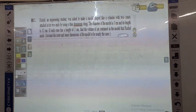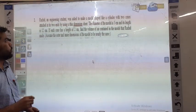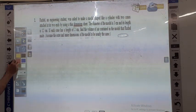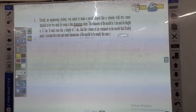Let us know what is possible. Rachel, an Indian student, was asked to make a model in a shape like a cylinder with two cones attached at its two ends by using a thin aluminum sheet.